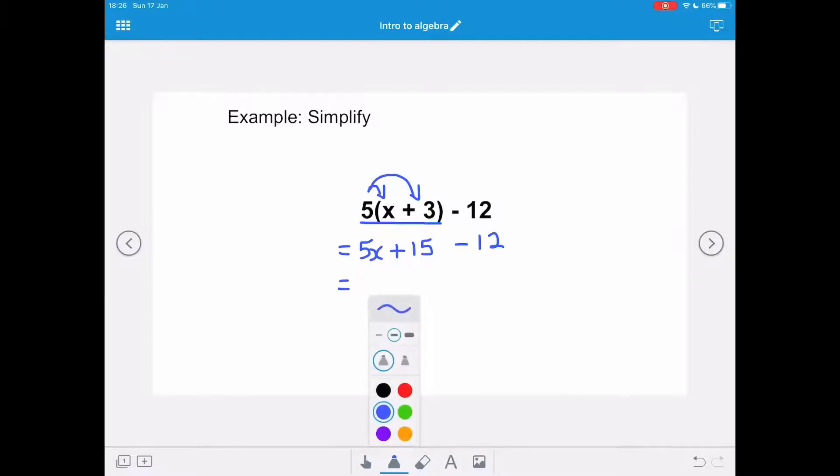Now we need to remember that we've still got to take away 12. Now we need to collect our like terms. So we've only got one x term but we've got two constant terms, and we've highlighted them and we're going to combine them so our final simplified answer is 5x+3.